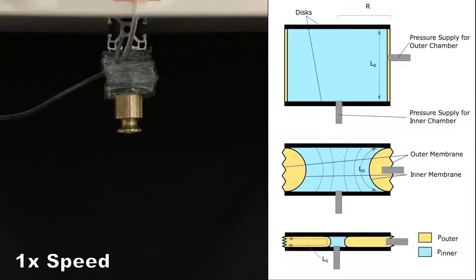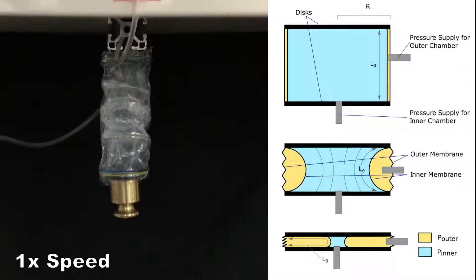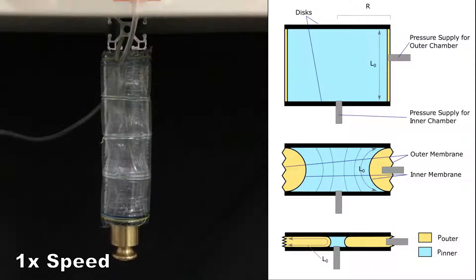The membrane is flexible but not stretchable, meaning that deformation occurs by wrinkling. The inner membrane wrinkles longitudinally, while the outer membrane wrinkles circumferentially.